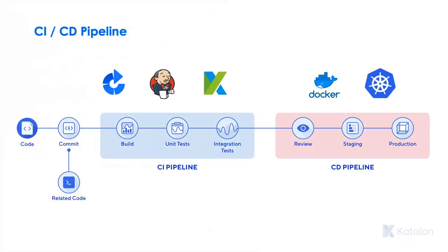Let's look at a typical CICD pipeline. What I have on screen is an example of where you can apply different tools as part of your CICD pipeline when it comes to testing. A CICD pipeline has two components: the integration piece, where code developed by different developers is checked into a code repository such as GitHub, and as that code is committed and merged, the overall build process is kicked off as part of the CI pipeline.